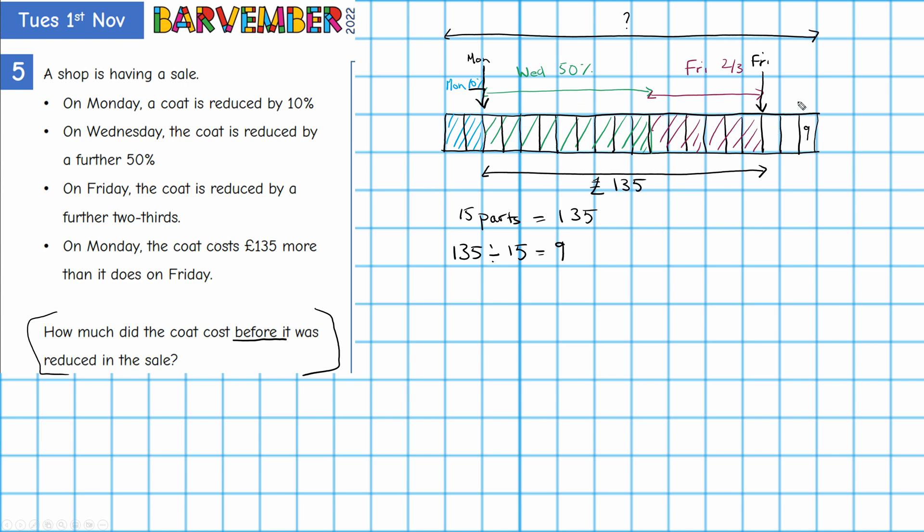And we know because that's 20 parts, don't we? Originally I had 10 parts and then I subdivided that. So I've got 20 parts in total. I know that each part has a value of £9.